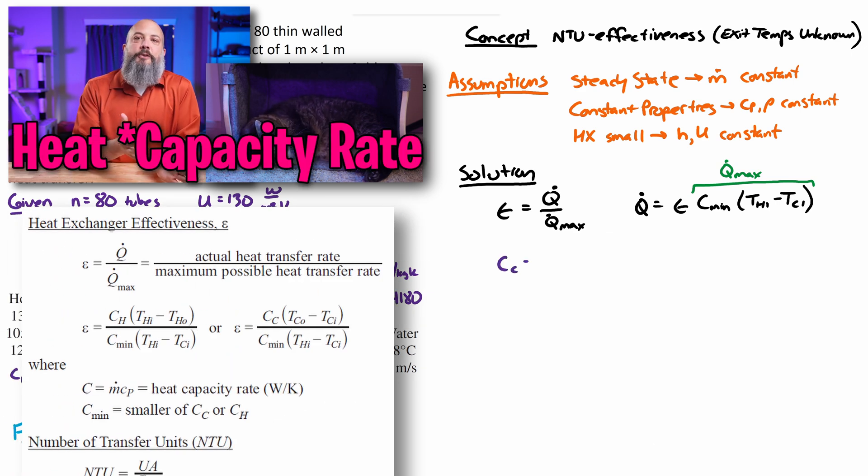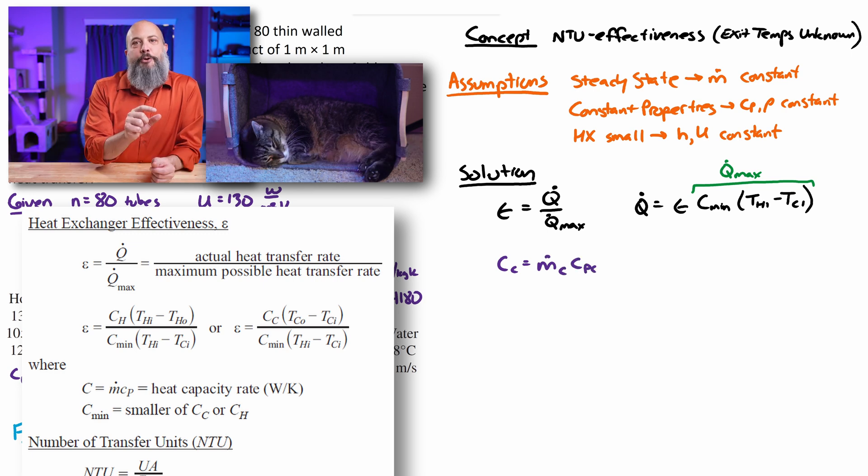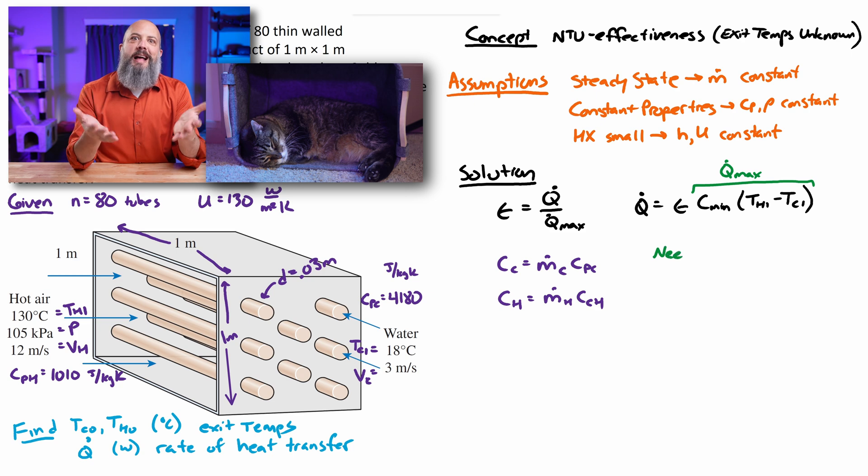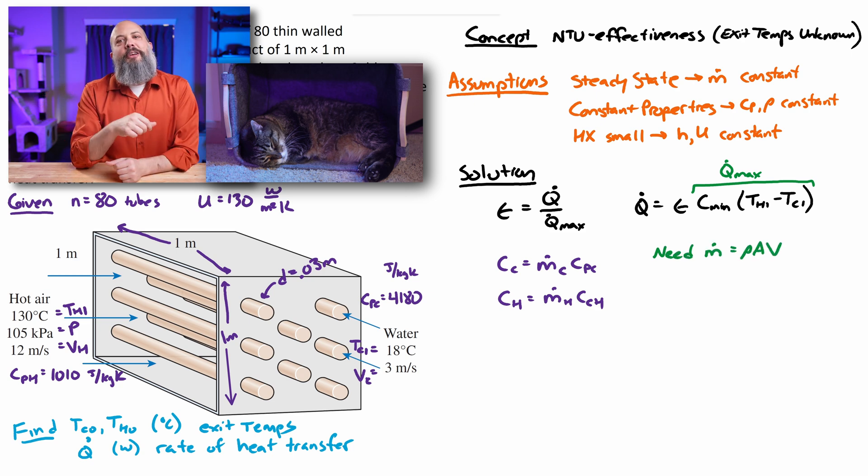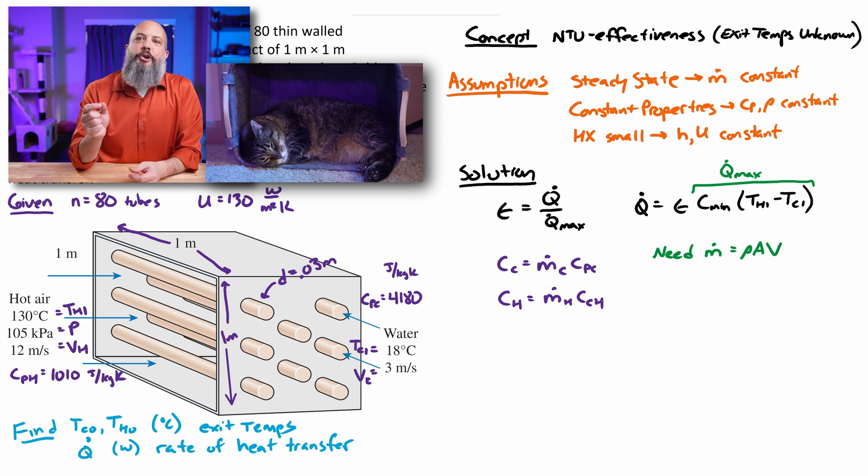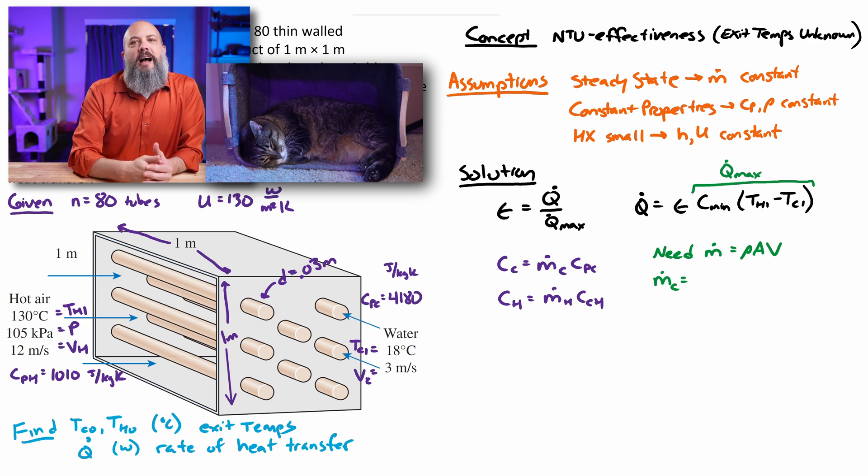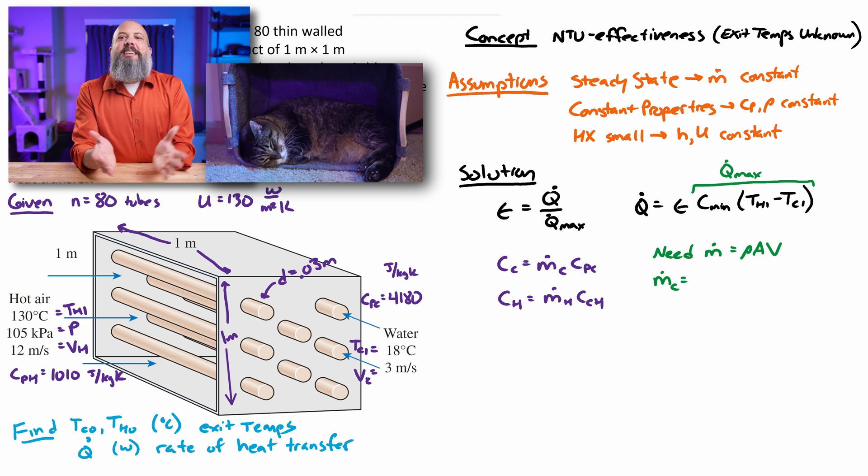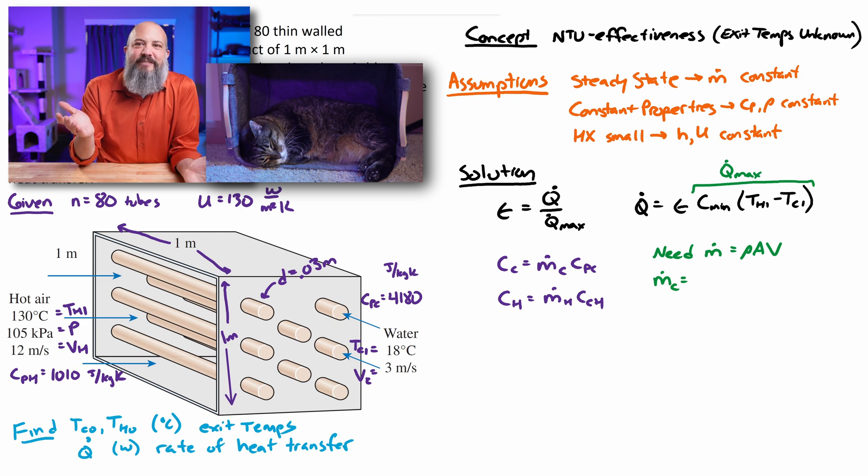And now this heat transfer rate, this is the capital C for the cold fluid would be M dot C and then C P C and capital C sub H would be M dot C P for the hot flow. So for the cold flow, we were not given M dot so we have to actually calculate this. We can use, think back to fluid mechanics. Rho A V density times cross sectional area times velocity gets us mass flow rate.